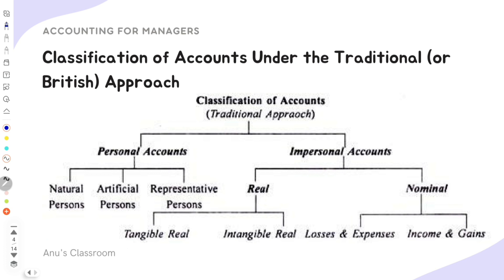Under the traditional or British approach, the first type is personal accounts — these could be actual individuals, natural persons, artificial persons such as business entities, or representative persons. Impersonal accounts are either real accounts — which can be tangible or intangible — or nominal accounts, which include income, gains, losses, or expenses. These are the sub-classifications of the three main traditional categories.